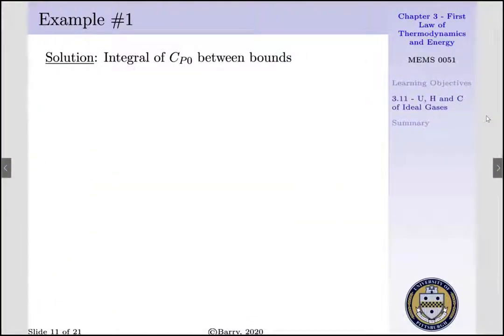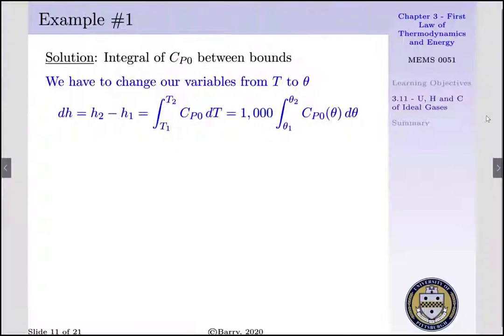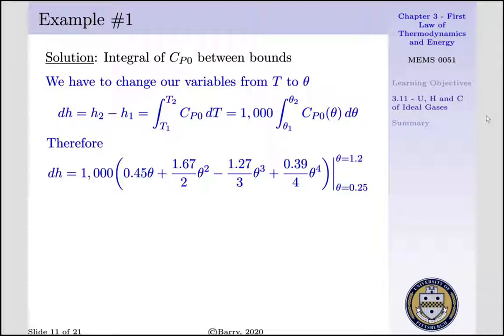Our third technique would be integrating CP0 between our bounds. Recall our change of enthalpy, dH, is equal to H2 minus H1, which would be equal to integral from state 1 to state 2 of CP0 dT. Now recall theta is equal to our temperature divided by 1000, and we have to change our variables from temperature to theta. Thus, dH would be equal to 1000 times the integral from theta 1 to theta 2 of CP0 d-theta. Therefore, our change of enthalpy is equal to 1000 times the quantity, 0.45 theta plus 1.67 divided by 2 theta squared minus 1.27 divided by 3 theta cubed plus 0.39 divided by 4 theta to the fourth, evaluated between theta 1, which is equal to 0.25, and theta 2, which is equal to 1.2.